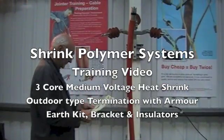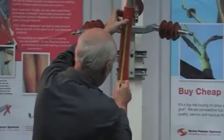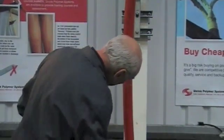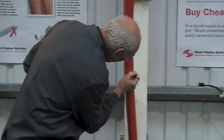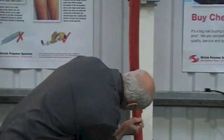We're going to show you the installation of a three core outdoor heat shrinkable termination. This could be for 12kV, 24kV, or 33kV XRP cable. The only difference will be the number of rain sheds and some of the components will be longer.